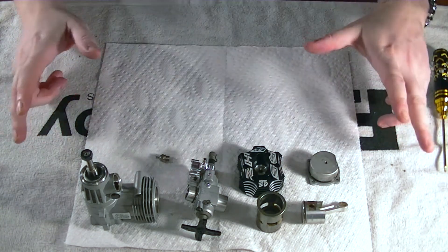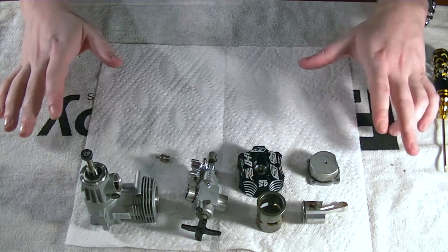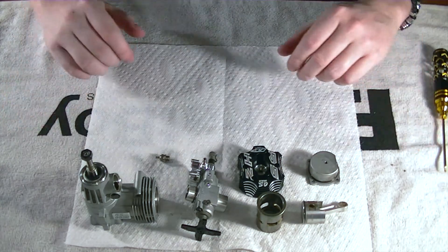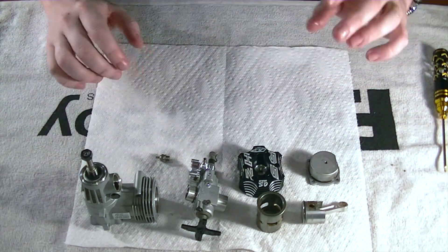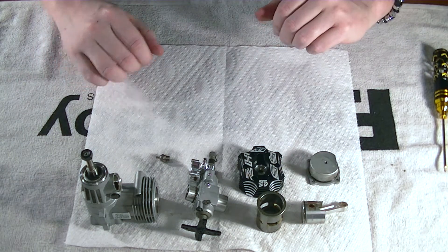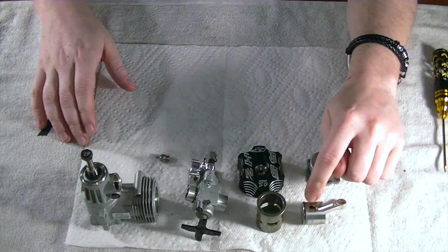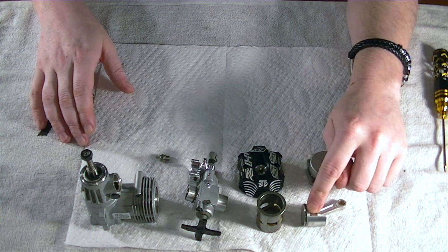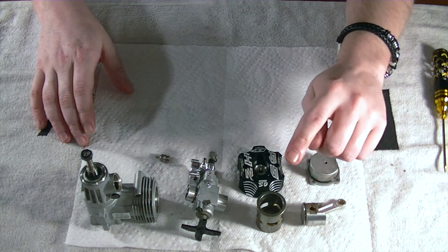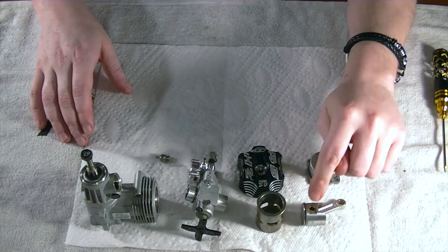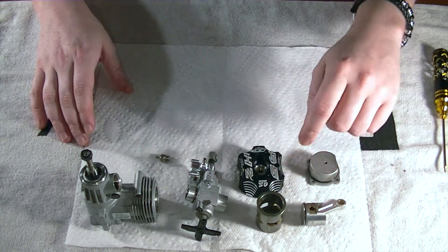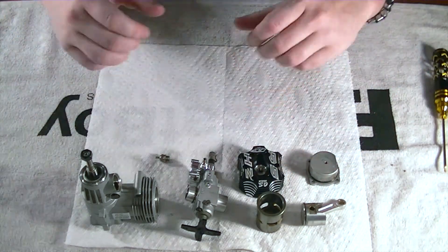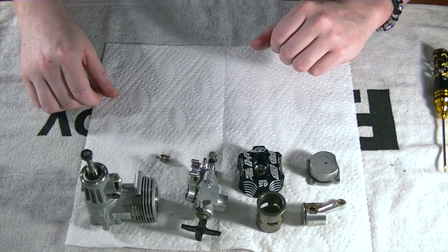So thank you so much for watching. Again, this is nitro engine deconstruction. Follow me in the next couple of video series guys. We're going to take some time and go over again how we're going to take a look at removing and replacing the ring on the piston, installing the sleeve over the piston. That's a tricky one. And then we'll just take a look at overall reassembly as well and move forward from there.